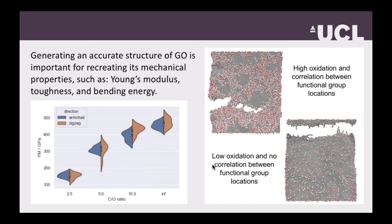Finally, we've been studying how the dispersion of these functional groups will affect graphene oxide's mechanical properties. As might be expected, the more oxidation that occurs, the Young's modulus will decrease. But we can also improve things like fracture toughness and rigidity.